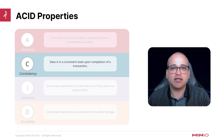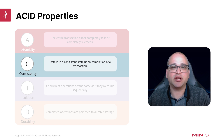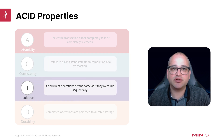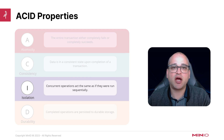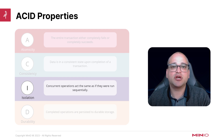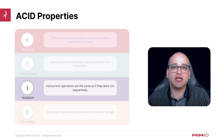Next, we've got consistency. This is often defined as our data always being in a strongly consistent state, even after any particular transaction has been completed. Then we have isolation. Isolation is a guarantee that if we have many concurrent operations going on at the same time, they won't interfere with each other. Another way of stating this is to say that the end results of two concurrent operations will be no different than if those two particular operations were run in sequence.